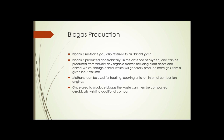Another up-and-coming method of disposal is biogas production. Biogas is methane gas, also sometimes called landfill gas or swamp gas. Biogas is produced anaerobically — in the absence of oxygen — and can be produced from almost any kind of organic matter, including plant debris and animal waste, though animal waste generally produces more gas from any given initial input volume. Methane can be used for heating, cooking, or to run internal combustion engines. Once waste has been used to produce biogas, it can then be composted aerobically, yielding an additional amount of compost.